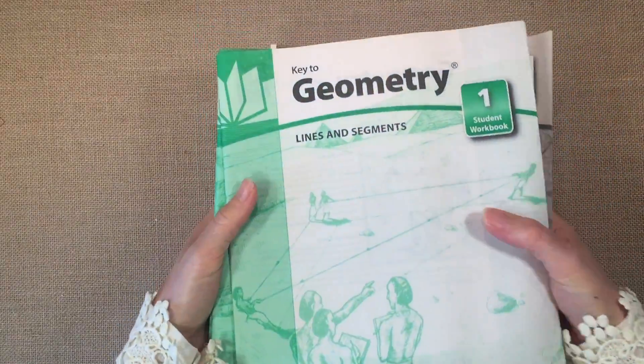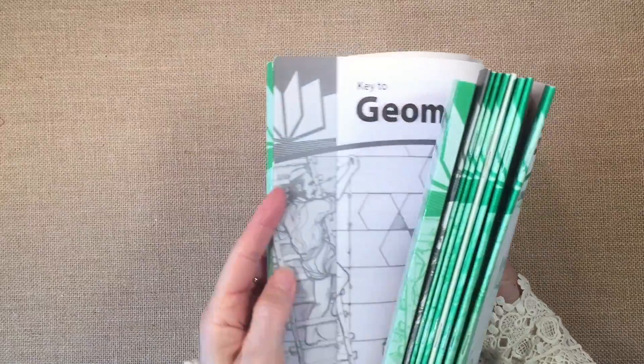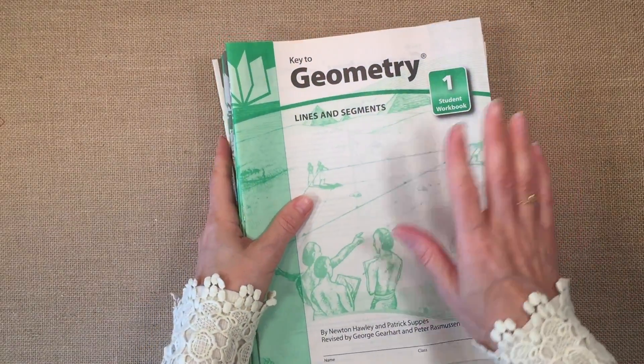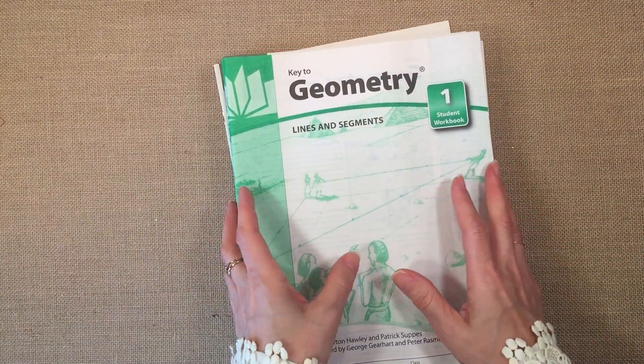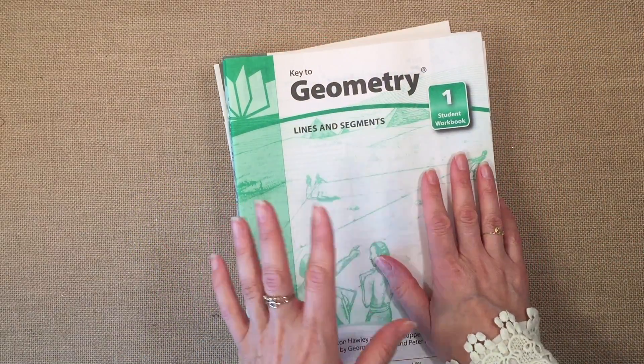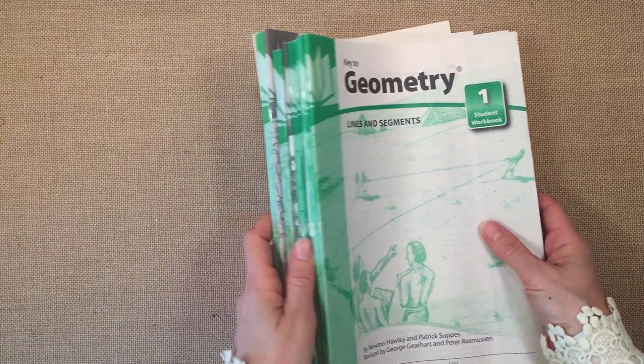You can buy these as a whole set that includes also the answer keys, or you can buy them as individual, just a single workbook. I would recommend that you buy them as a complete set and work through them from start to finish. I've had the best success that way.